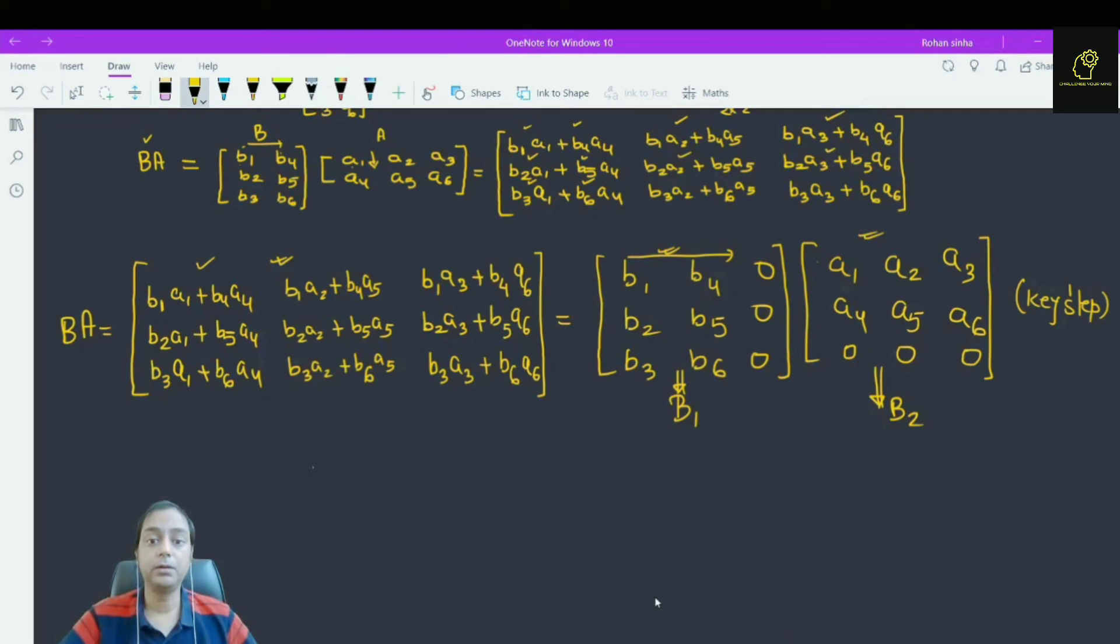Third row, this is third row and first column: B3 A1, B6 A4. So, you find the same result.